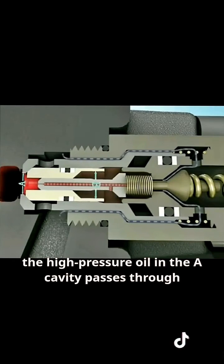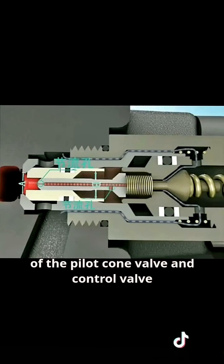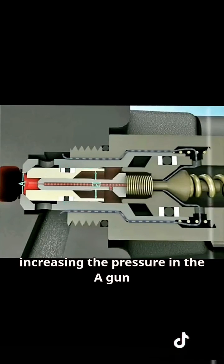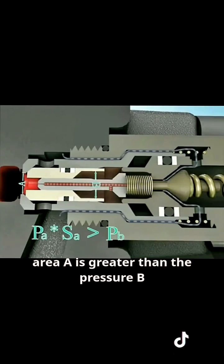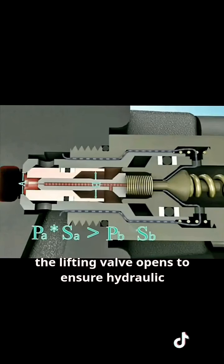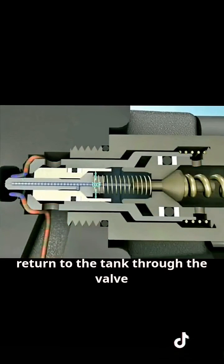At this time, the high-pressure oil in cavity A passes through two orifices on the piston and the routing oil of the pilot cone valve and control valve, increasing the pressure in cavity A. When pressure A multiplied by cross-sectional area A is greater than pressure B multiplied by cross-sectional area B, the lifting valve opens to ensure hydraulic system safety by allowing high-pressure oil to return to the tank through the valve.